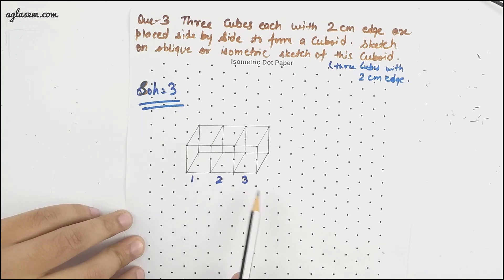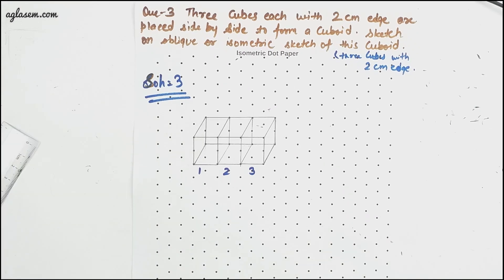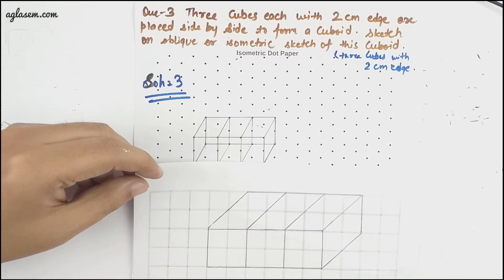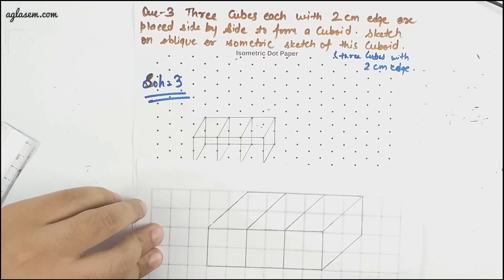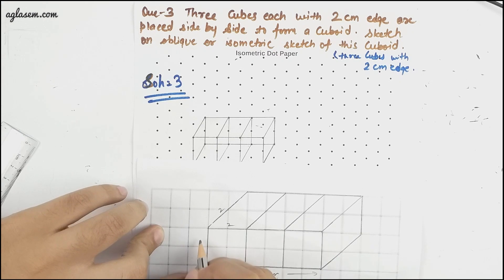And they form a cuboid. The oblique sketch will be obviously a square diagram where we will draw nothing but we'll plot two things together. So now for oblique sketch how it will look like is this. So 2 cm this side, 2 cm this side. When we combine this it's 6 cm this side and 2 is the height.